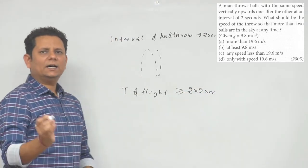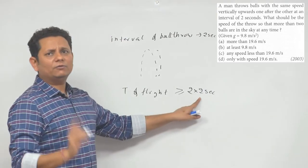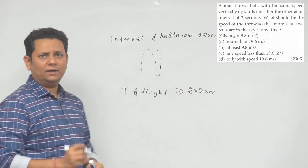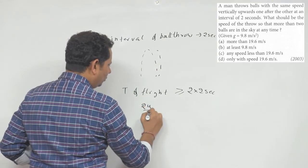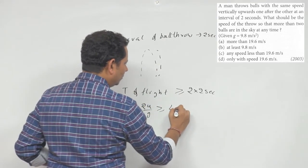That is, 4 seconds or more should be your time of flight to go up and come back down. So time of flight, which is 2u/g, should be greater than or equal to 4 seconds.